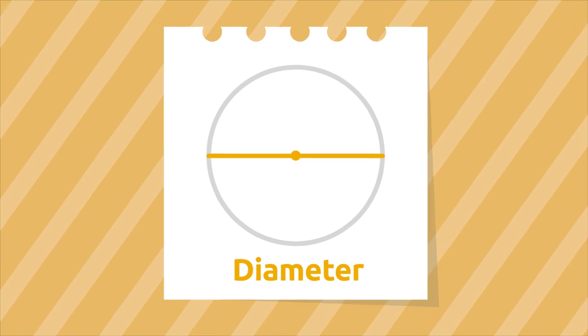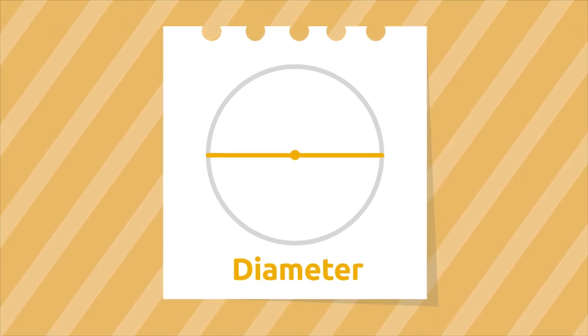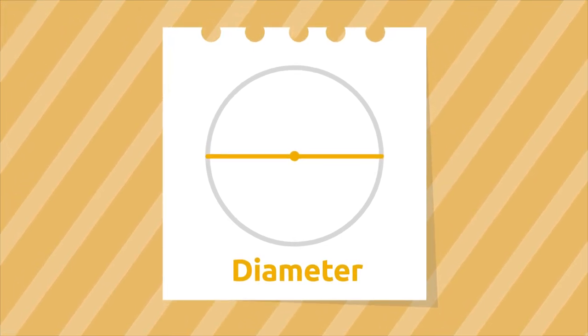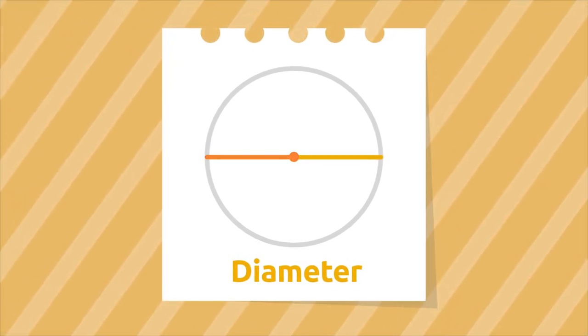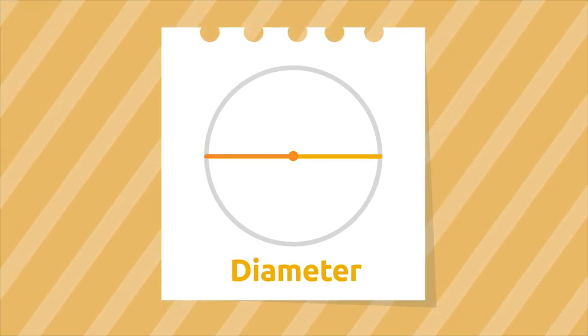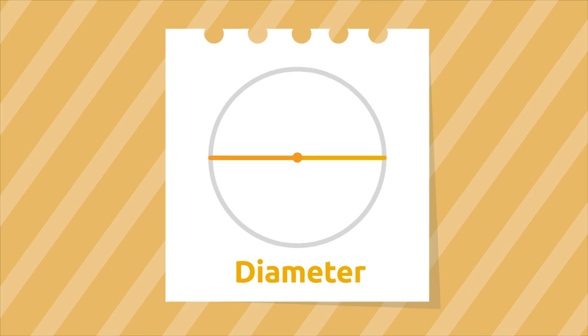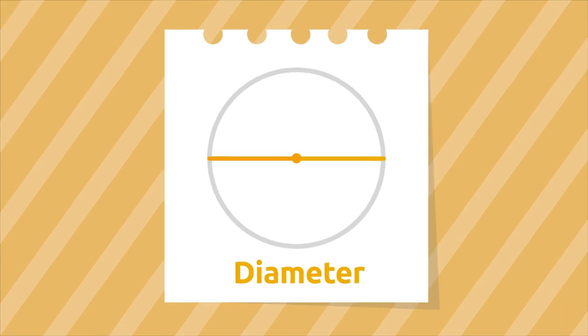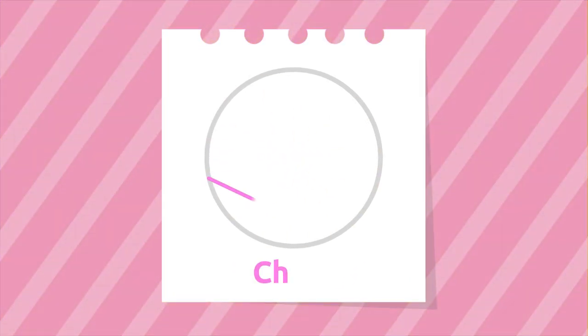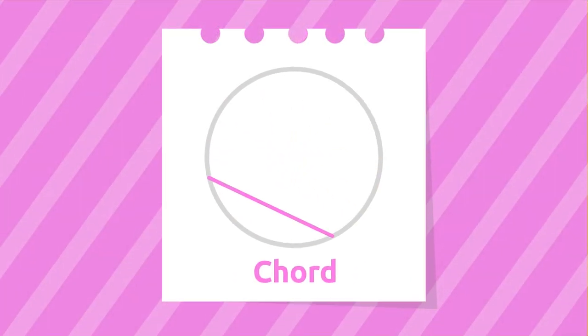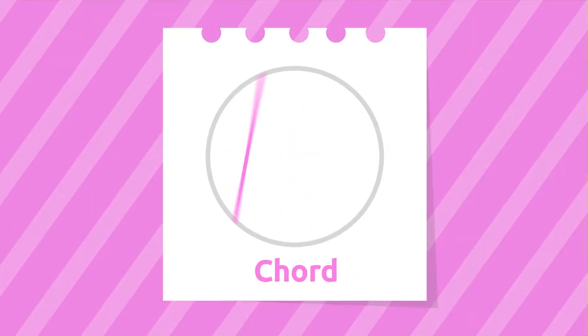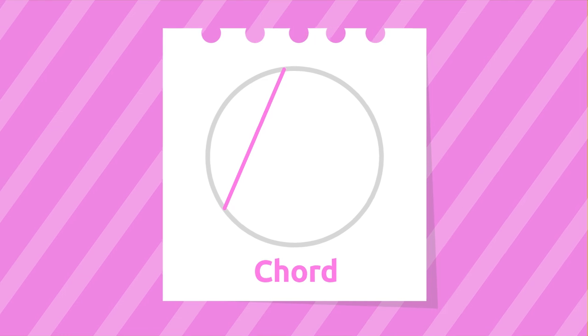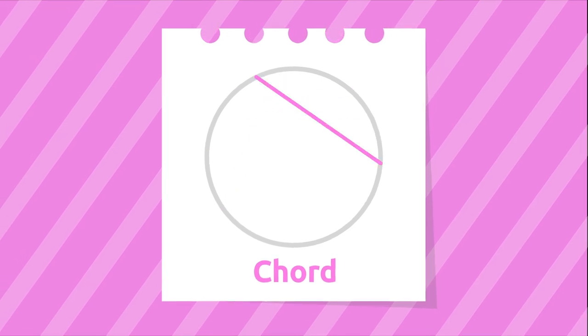The diameter is a segment which connects two points of the circumference passing through the center — it divides the circle into two parts. As you can see, the diameter is twice the radius. The chord is the segment which connects any two points of the circumference.